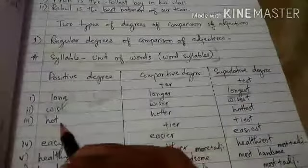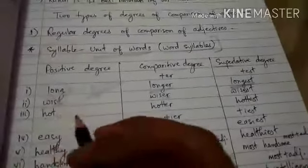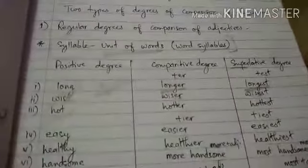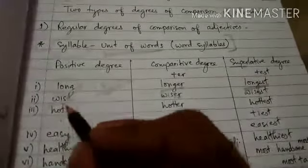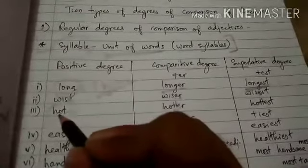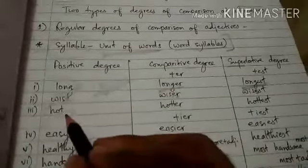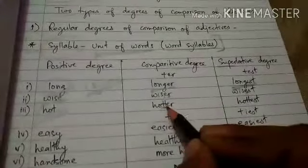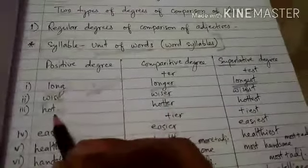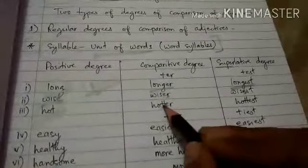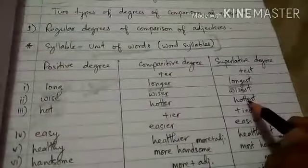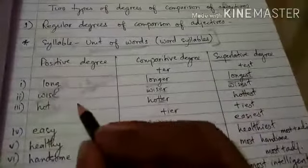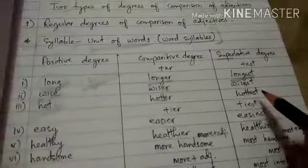Another important rule: 'hot' is also a single-syllabic word, but it ends with a consonant and has a single vowel before it. If any single-syllabic word ends with a single consonant and has a single vowel before it, we have to double the consonant, then add ER for comparative and EST for superlative. So: hot → hotter → hottest. Similarly: sad → sadder → saddest; fit → fitter → fittest.